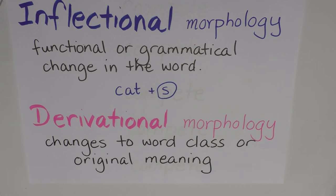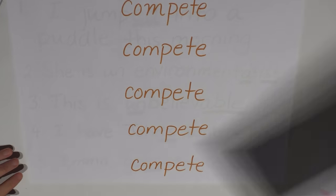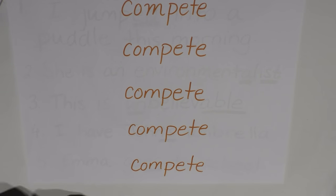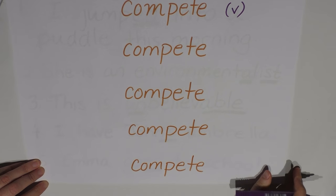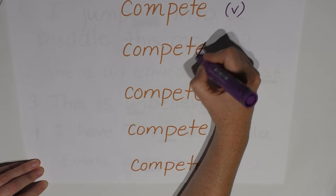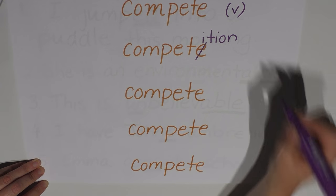So let's take the word compete, for example. Now, compete is a verb. If we add -ition onto the end, so we'll remove the E and add -ition, it becomes competition. Now, competition is a noun.